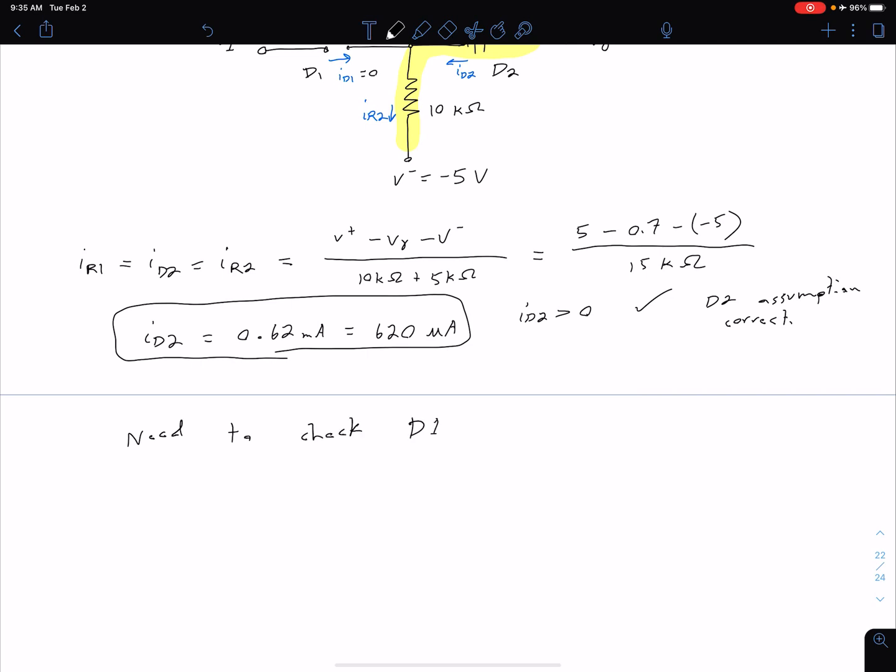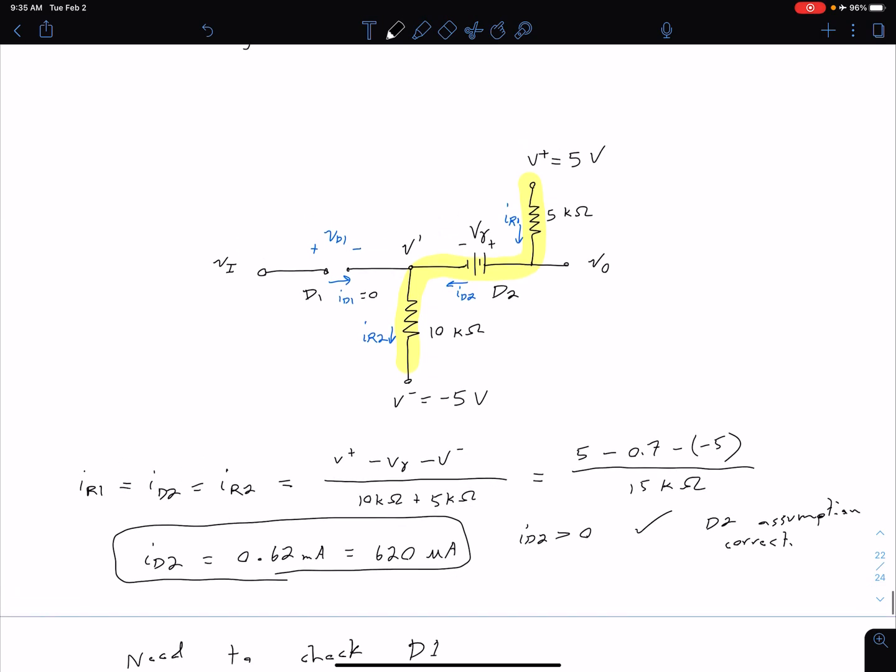And so that's important to note because note that we could find our V_out now with this current I_D2 even without checking our D1 assumption. But it's important to note that we have gotten the correct state for D1 because if it turns out that's incorrect then that's going to change our analysis. We no longer have that single path for our current.